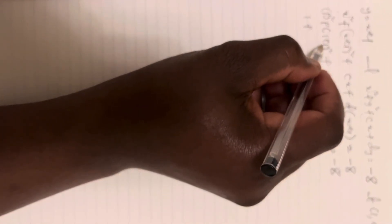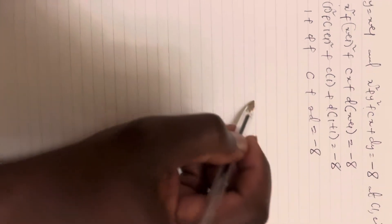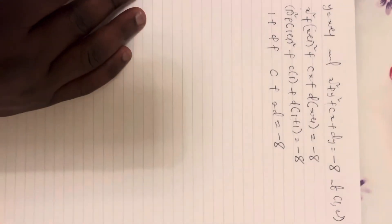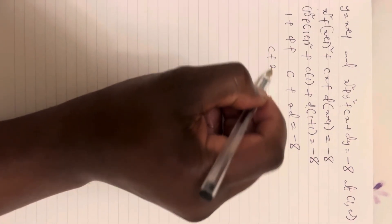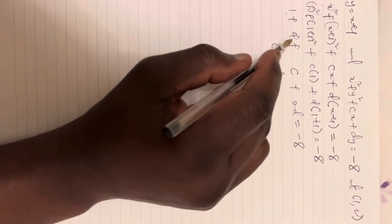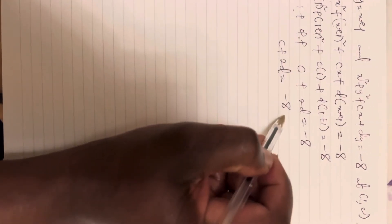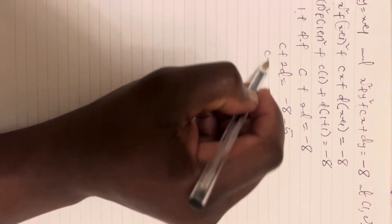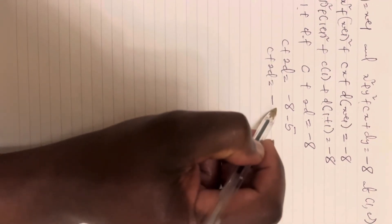Substituting x = 1: 1² + (1+1)² + c(1) + d(1+1) = -8. So we have 1 + 4 + c + 2d = -8. That gives us c + 2d = -8 - 5, so c + 2d = -13.